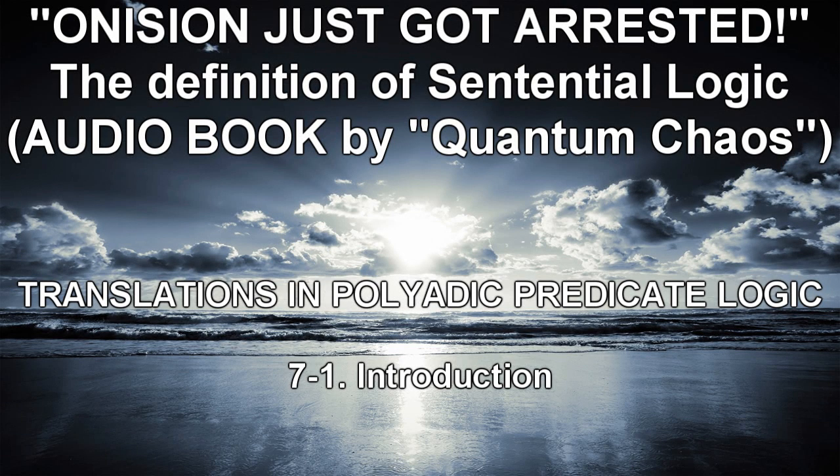Recall that predicate logic can be conveniently divided into monadic predicate logic on the one hand, and polyadic predicate logic on the other. Whereas the former deals exclusively with one-place monadic predicates, the latter deals with all predicates — one place, two place, etc. In the present chapter, we turn to quantification in the context of polyadic predicate logic.